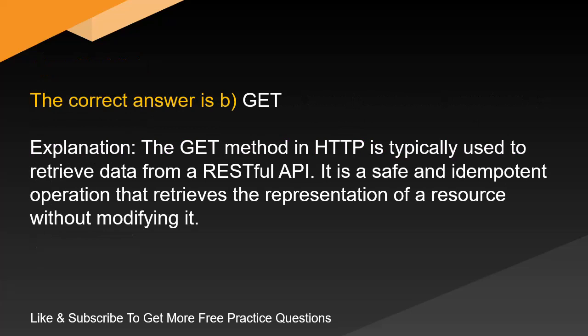The correct answer is B. GET. Explanation: The GET method in HTTP is typically used to retrieve data from a RESTful API. It is a safe and idempotent operation that retrieves the representation of a resource without modifying it.